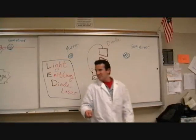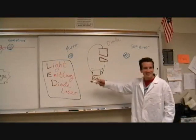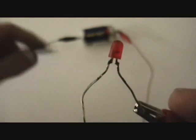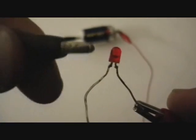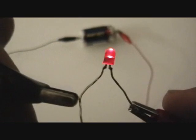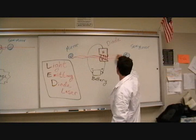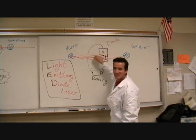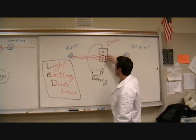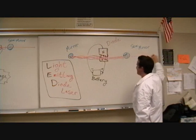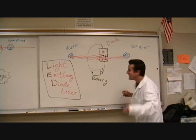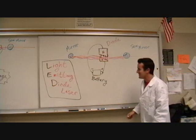The third type of laser is the light-emitting diode laser. You take a diode, like this one, and you put a battery on it. As the electrons fall, they emit red light, which bounces back and forth between the mirrors, stimulating more and more emission, and eventually emerging in a straight line on this side of the semi-mirror.